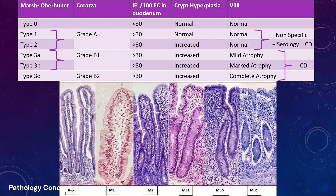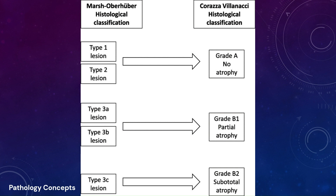The second classification by Korazza and Villanachy divides lesions into two grades. Grade A is non-atrophic. Grade B is subcategorized into B1, where the villi-to-crypt ratio is less than 3:1 but villi are still identifiable, and B2, where villi are entirely atrophic. Grade A corresponds to Marsh-Oberhuber Types 1 and 2; Grade B1 includes 3a and 3b; and Grade B2 includes 3c.